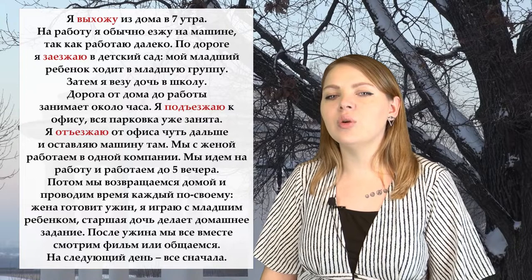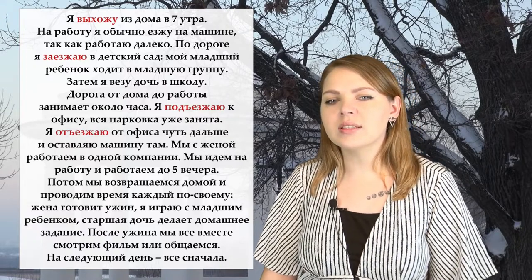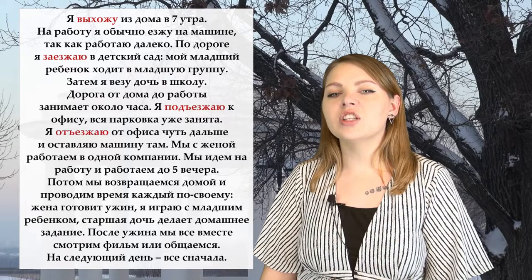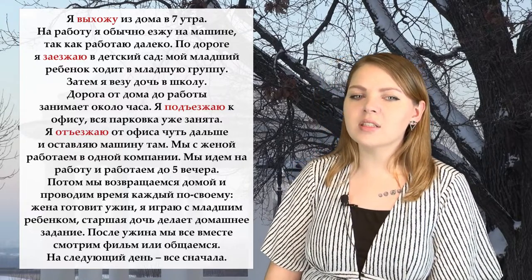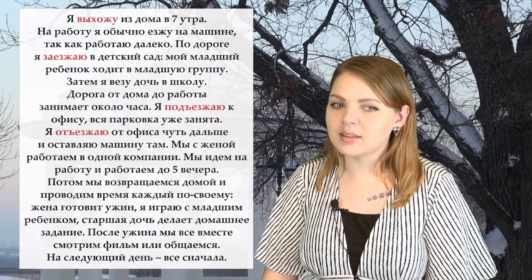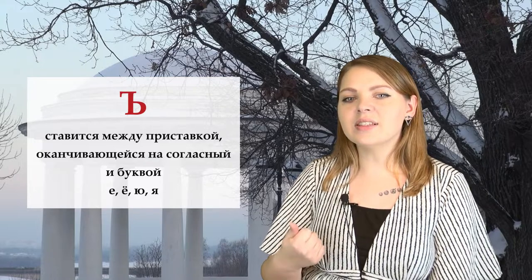В ряде из них есть определённая особенность — твёрдый знак. Буква, которая не обозначает звука, но просто необходима на письме. Без этой буквы слова звучали бы странно и бессмысленно. Сравните: отъезжаю — отъезжаю. Разделительный твёрдый знак ставится между приставкой, оканчивающейся на согласный, и буквой Е, Ё, Ю, Я. Таким образом, в слове «заезжаю» твёрдый знак нам не нужен, так как приставка оканчивается на гласный.